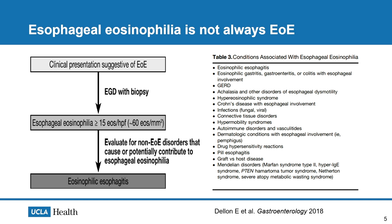Esophageal eosinophilia is not always EOE. In terms of the diagnostic algorithm, if a patient presents clinically with symptoms suggestive of EOE, they should undergo an upper endoscopy with multiple-level esophageal biopsies. If esophageal eosinophilia is present at more than 15 eosinophils per high-powered field, you should evaluate for non-EOE disorders including EGIDs, acid reflux, achalasia, Crohn's disease, connective tissue disorders, infections, hypersensitivity, and drug reactions. If you've excluded those causes and the patient meets the criteria, then you have a diagnosis of EOE.